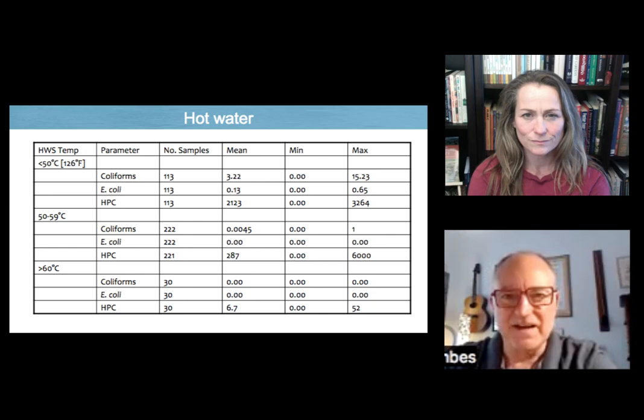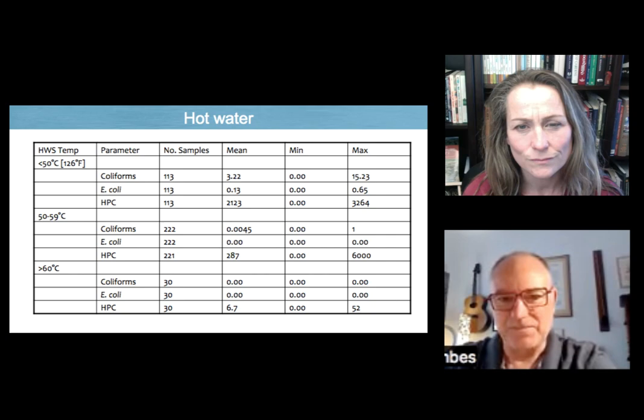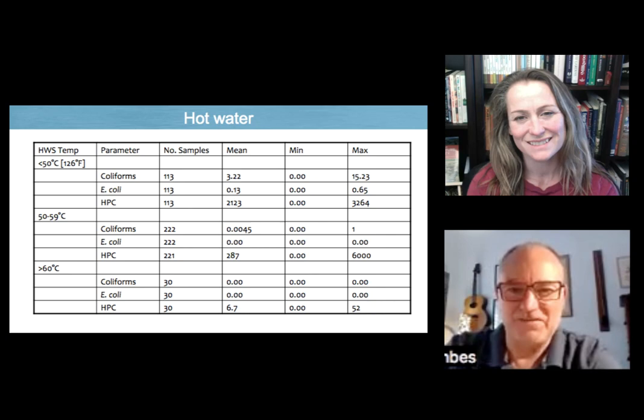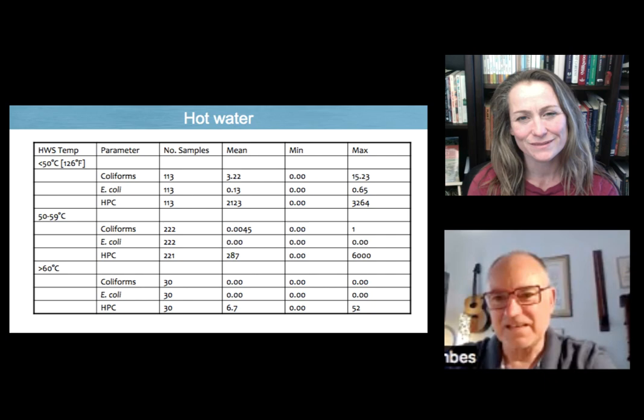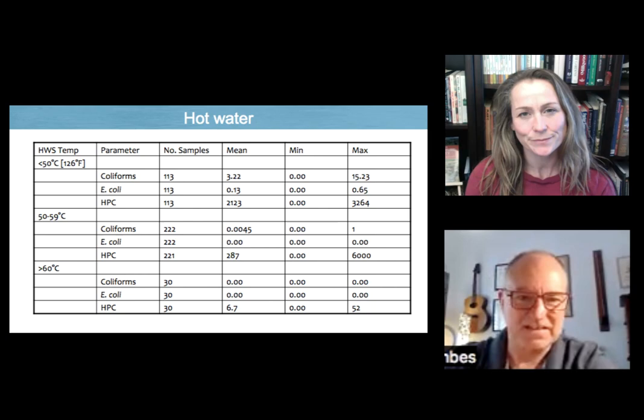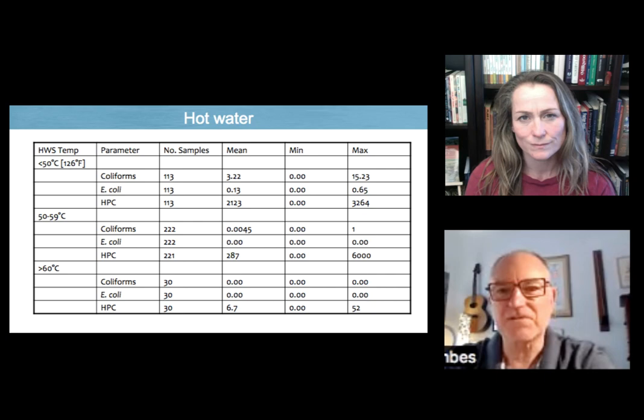So if you then go down to between 50 degrees and 59 degrees Celsius, you can see the mean results from the testing is reduced to very, very small numbers. You know, 0.0045 of a coliform. And you can see even the maximum results is one count of a coliform and none of the E. coli and 6,000 of heterotrophic plate counts. But bacteria is in all water. We're concerned about pathogens. So it's removed the majority of the indicators of pathogens. But I'll come to that in a second.